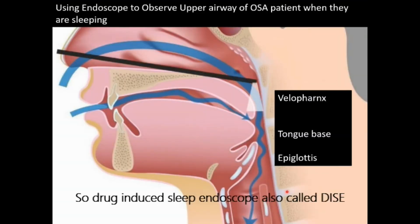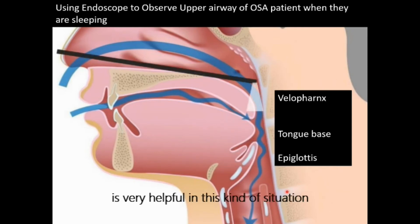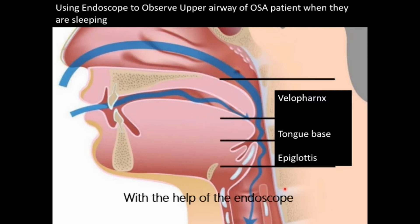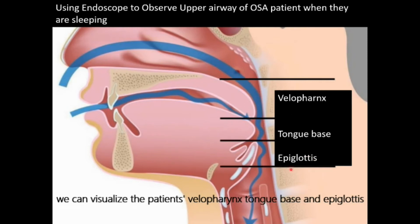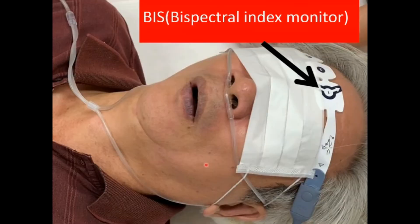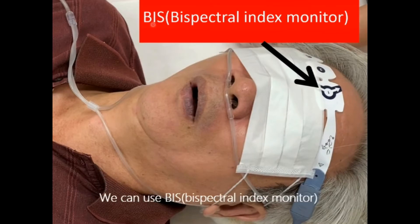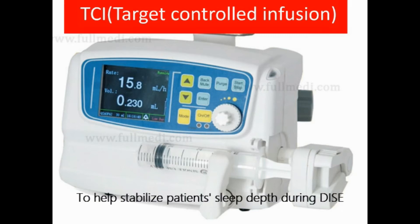This device puts a tube between the patient's tongue and soft palate and sucks the air out to help stabilize the airway. Without the mask on the patient's face, it may be more acceptable. However, how do we know who are the best candidates for this therapy? The drug-induced sleep endoscopy, also called DISE, is very helpful in this situation. With the help of the endoscope, we can visualize the patient's velum, tongue base, and epiglottis when patients are asleep. To control the sleep depth in DISE, we use the bispectral index monitor and target control infusion, TCI, to help stabilize the patient's sleep depth during DISE.